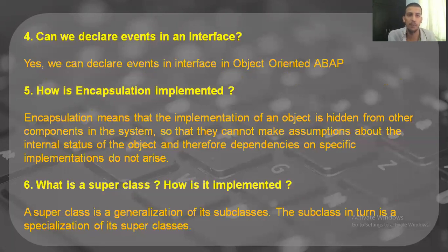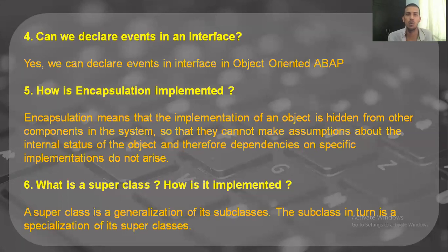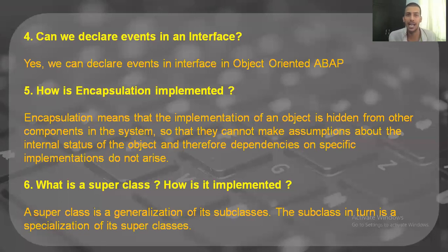How is encapsulation implemented? Encapsulation basically means that the implementation of an object is hidden from other components — it's like a hidden status. This is done to reduce the complexity for the user and for a developer. The end user would not make assumptions about the internal status of an object, and hence dependencies on specific implementations would not arise. That is the reason why we use encapsulation.